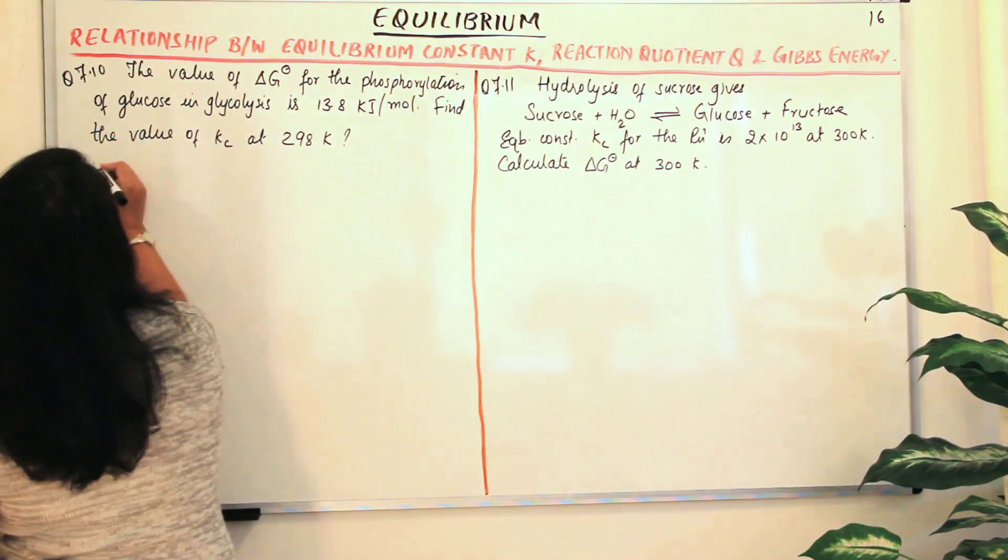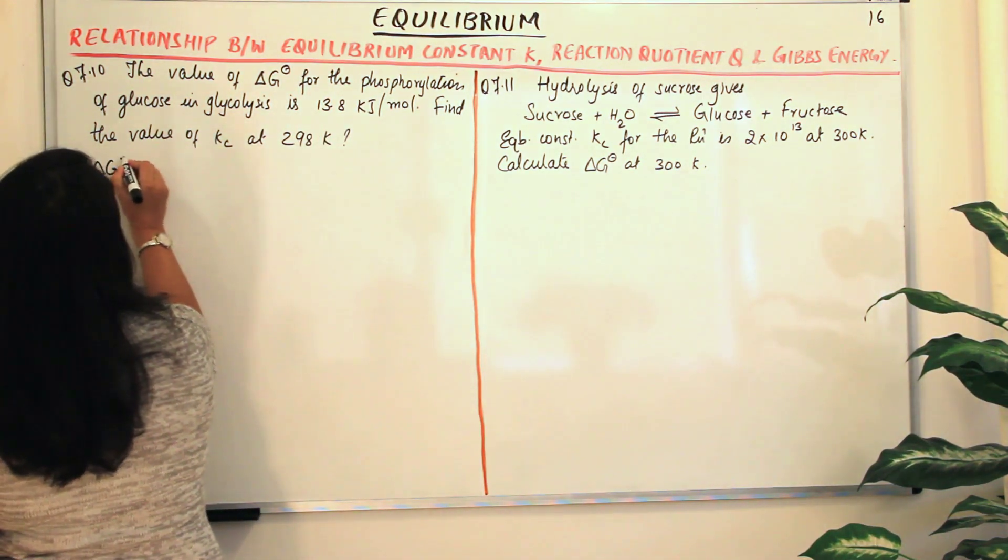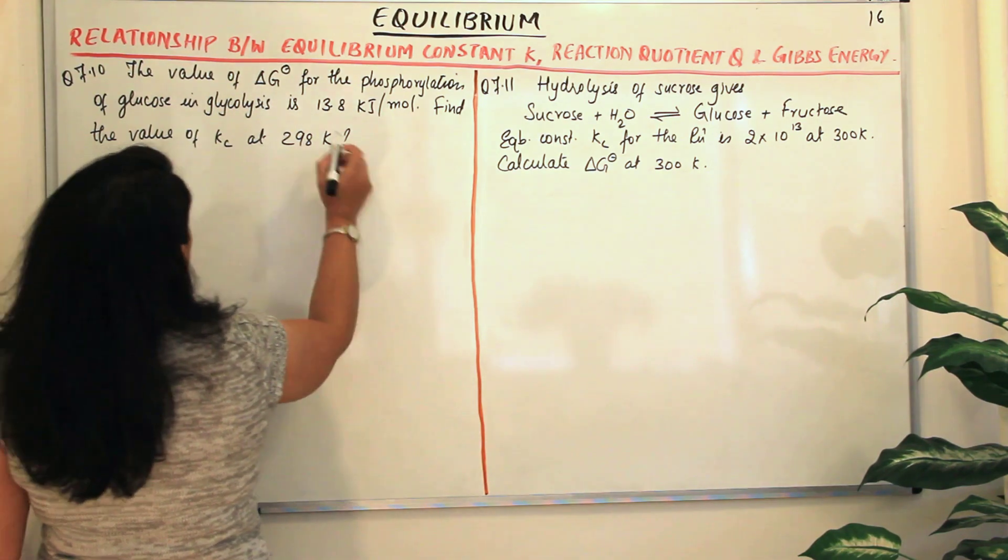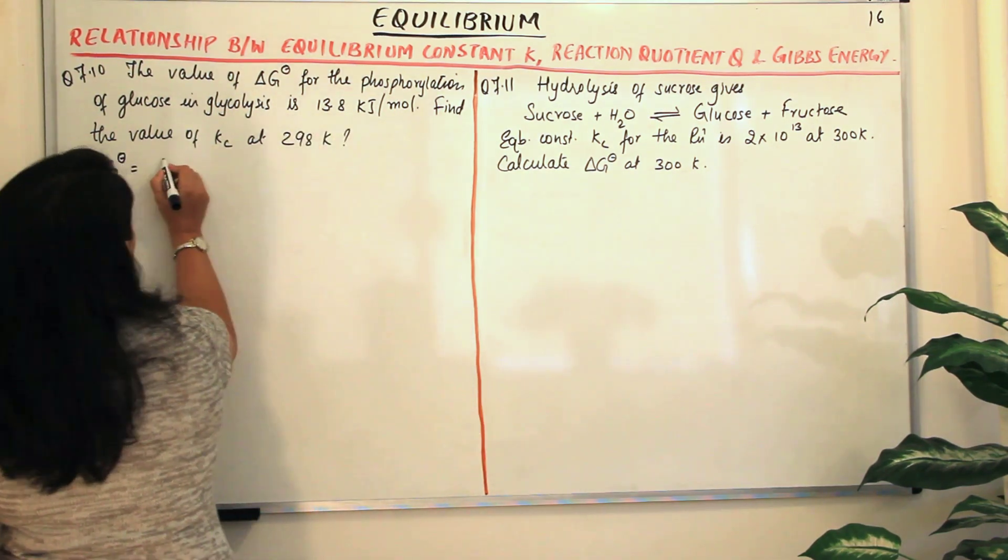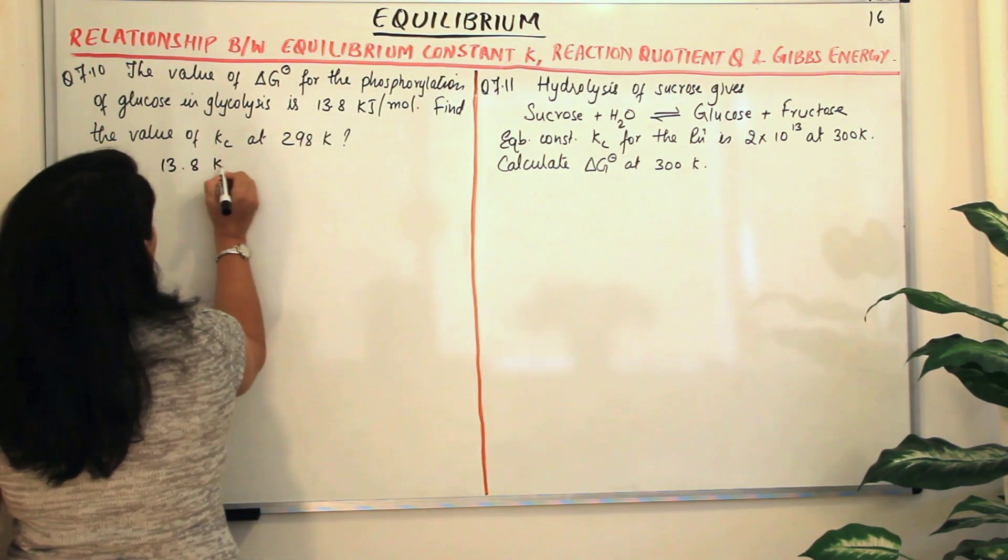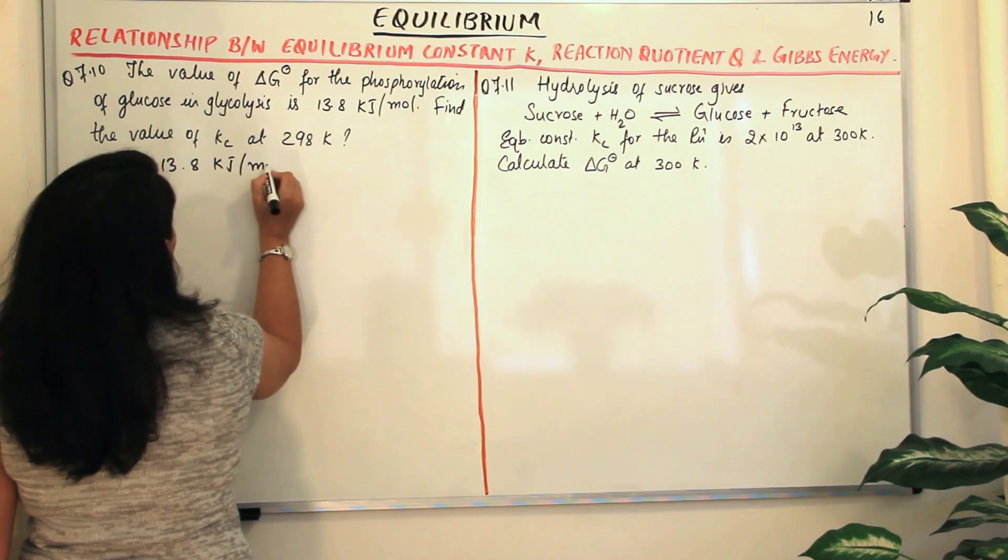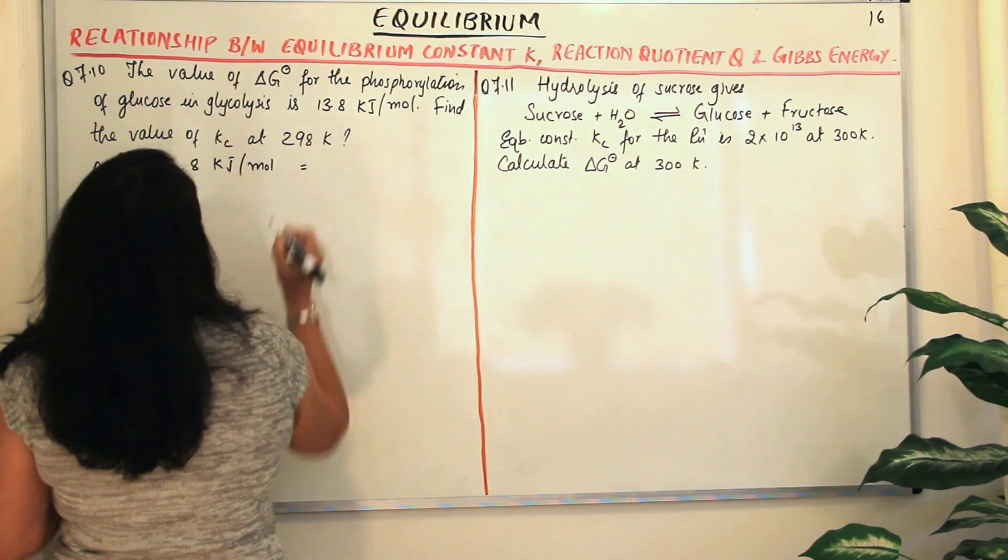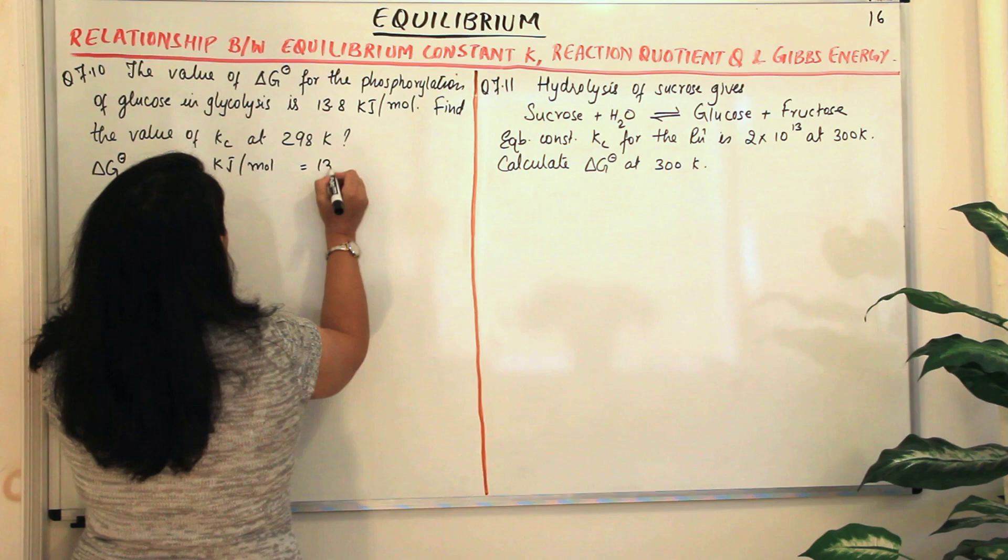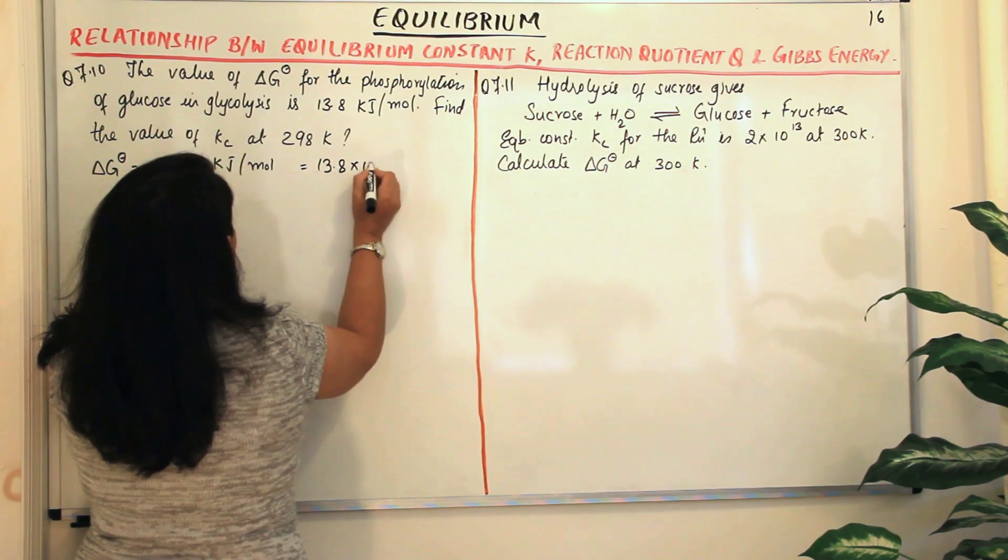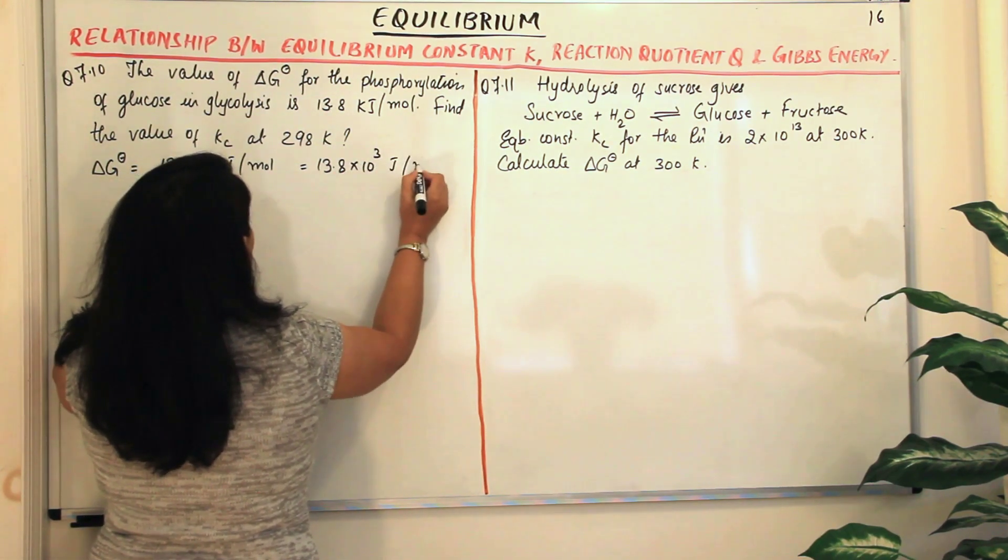What is given to us? Delta G naught is given to us for the phosphorylation, equal to 13.8 kilojoules per mole. Let us convert this into joules per mole. It would be equal to 13.8 into 10 to the power 3 joules per mole.